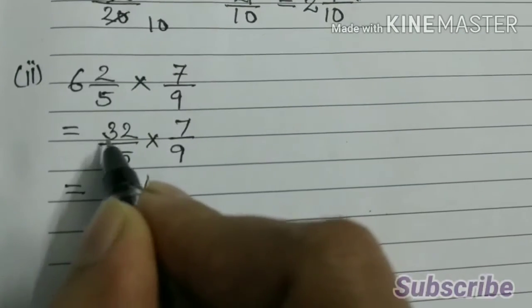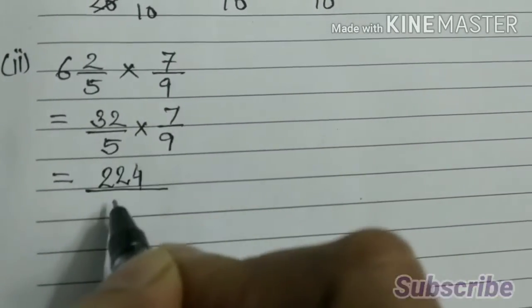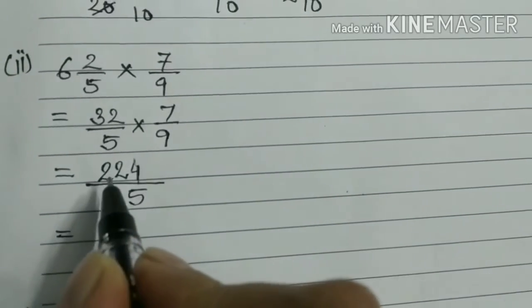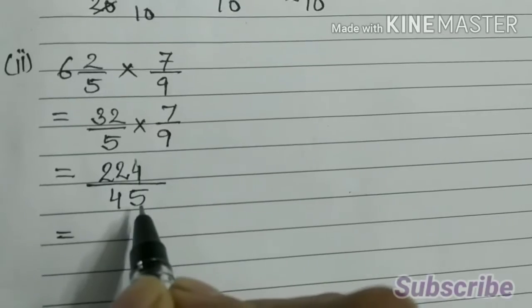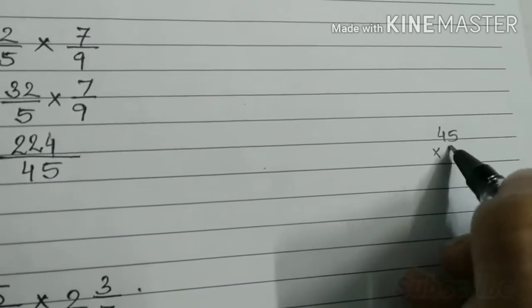7 3s are 21 plus 1, 22, 224 by 45. Now let us divide 224 by 45. So 45 into 4.